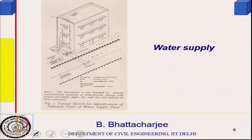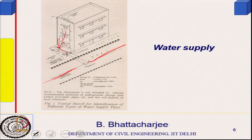A typical water supply in a low-rise building will have these kinds of components. In a three-storey building, you have the municipal main supply. From there, there are service lines. You can store water in an overhead tank, and there can be direct supply to each floor. A booster pump takes water to the overhead tank for storage.